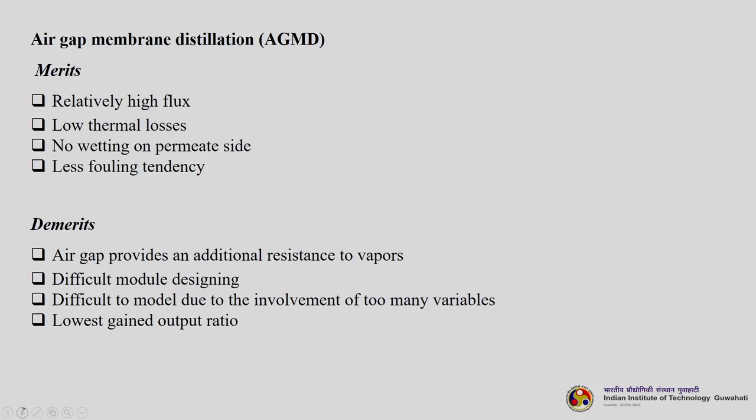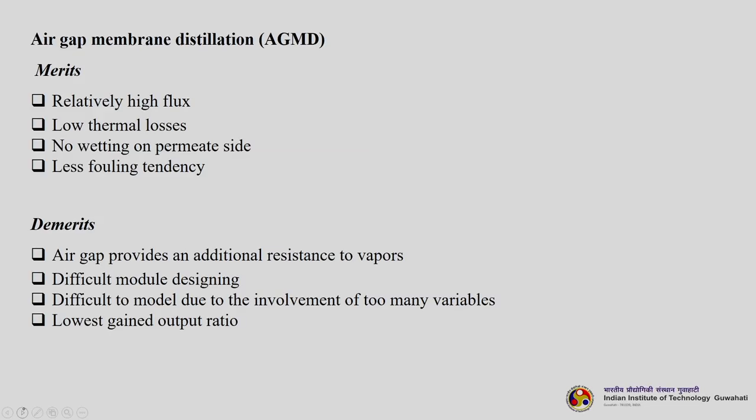Air gap membrane distillation (AGMD) maintains relatively high flux compared to other systems, has low thermal losses and no wetting on the permeate side since liquid is not forced through, and has less fouling tendency. Demerits include that the air gap provides an additional resistance to vapors — the magnitude depending on the components being transferred — difficult module design, and the lowest gain output ratio.